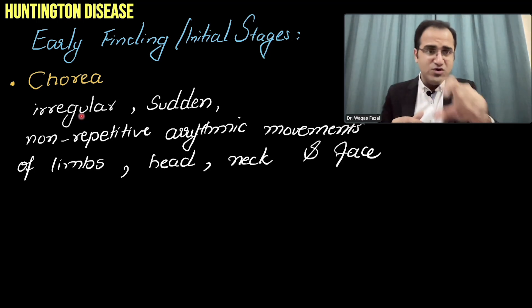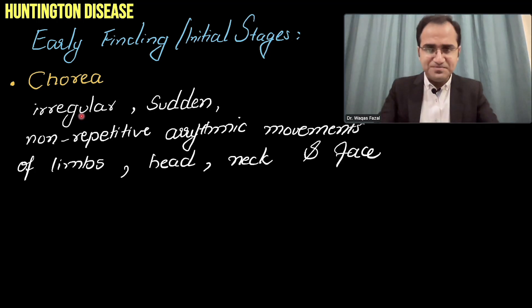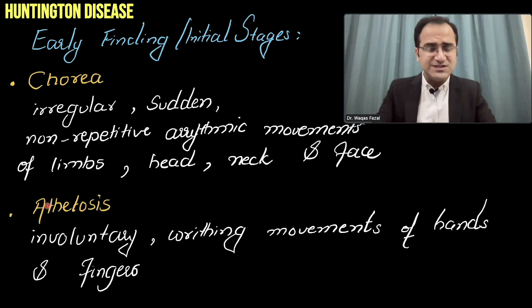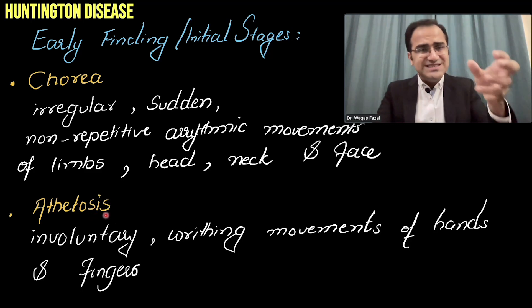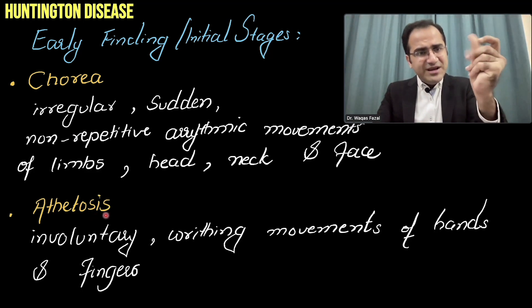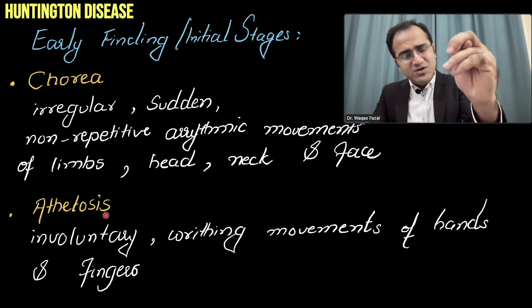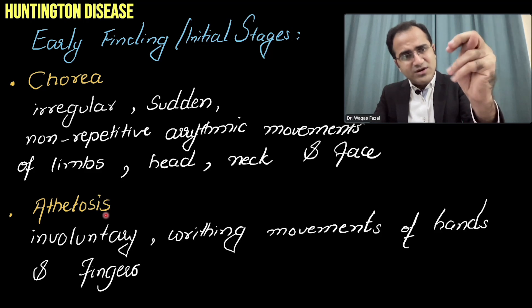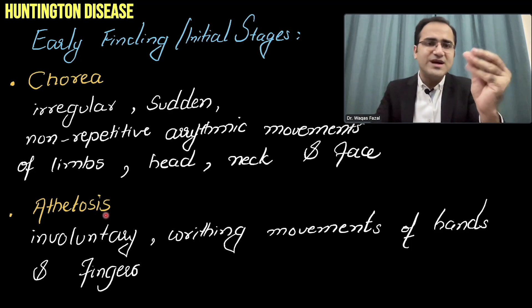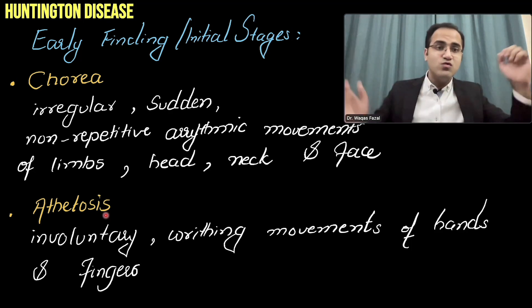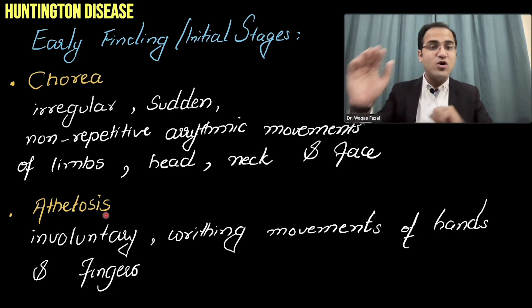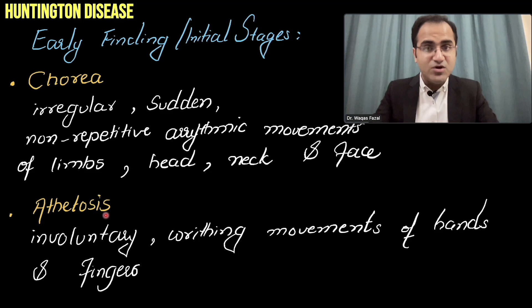There is also athetosis — slow, writhing, involuntary movement of the hands and fingers. These patients have involuntary writhing hand movements called athetosis, combined with the non-repetitive abnormal body movements of chorea.